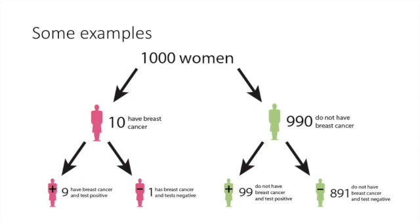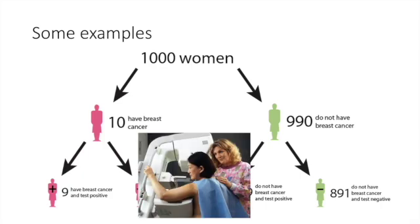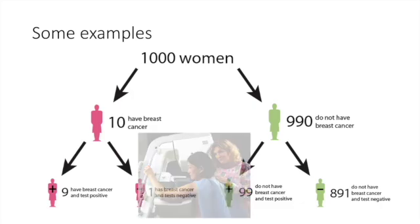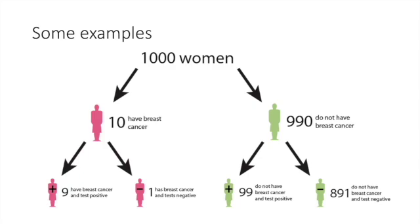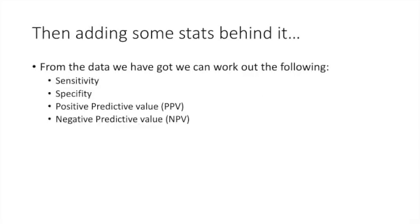The second line is the actual proposed test — in this case, mammogram breast screening. You can see the results have started to change: 9 have breast cancer and tested positive, meaning it was picked up on mammogram, and 1 was not. Additionally, 99 do not have breast cancer but have tested positive, and 891 do not have breast cancer and have tested negative.